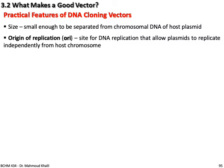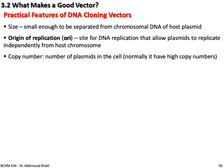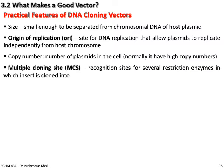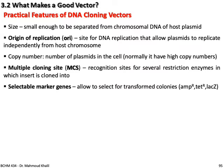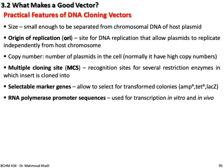What makes a good vector? The practical features of DNA cloning vectors: size — small enough to be easily separated from chromosomal DNA of the host. Origin of replication — a site for DNA replication that allows the plasmid to replicate independently from host chromosomes. Copy number — the number of plasmids in the cell; normally high. Multiple cloning site (polylinker) — a region with several restriction enzyme sites where the gene is inserted. Selectable marker genes — antibiotic selection to select transformed colonies. Enabled risk promoter sequences used for transcription in vitro and in vivo.